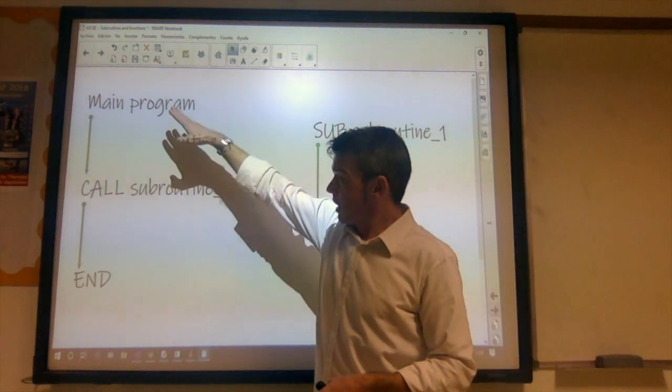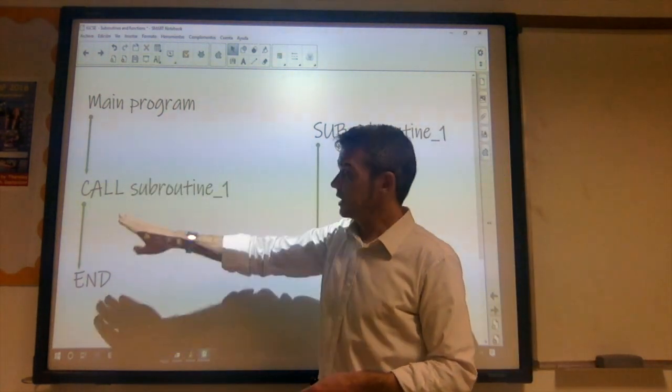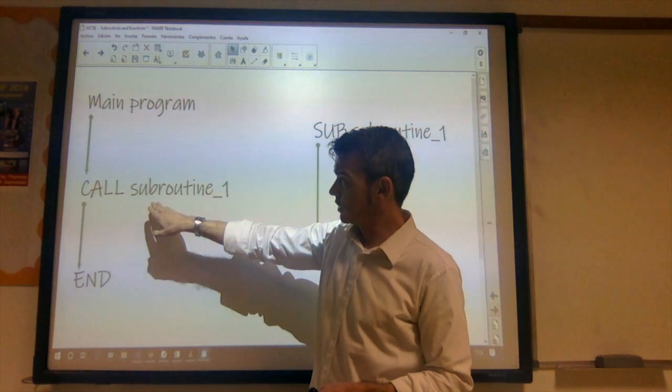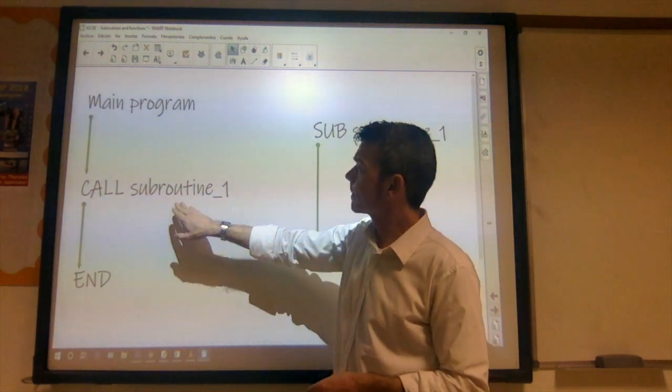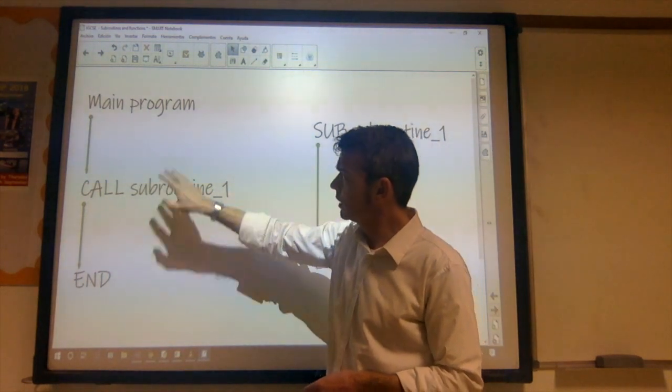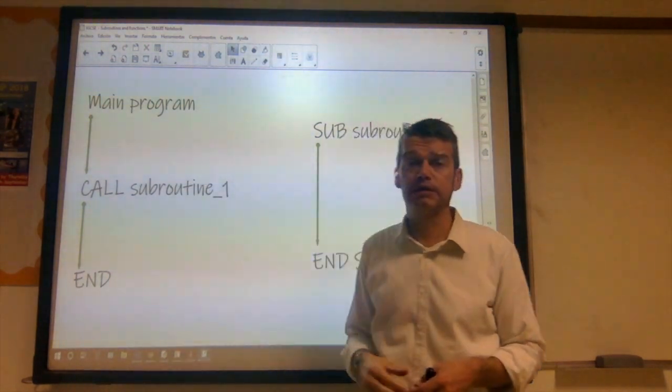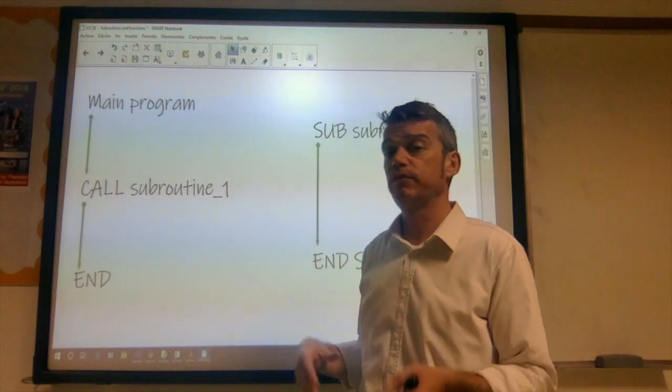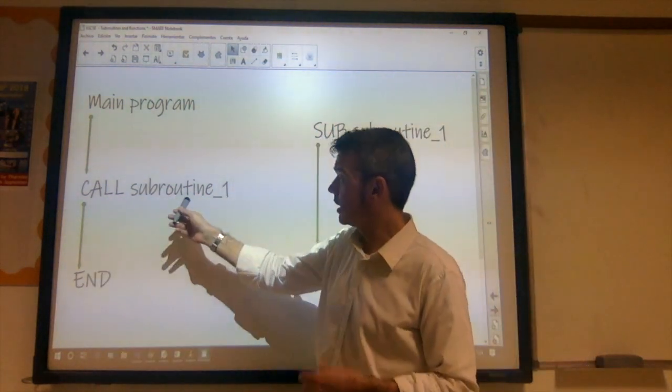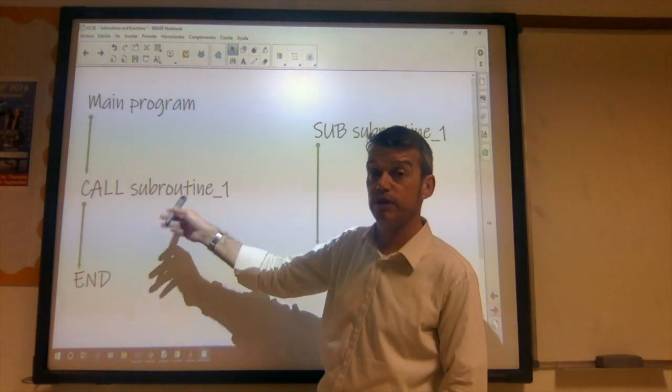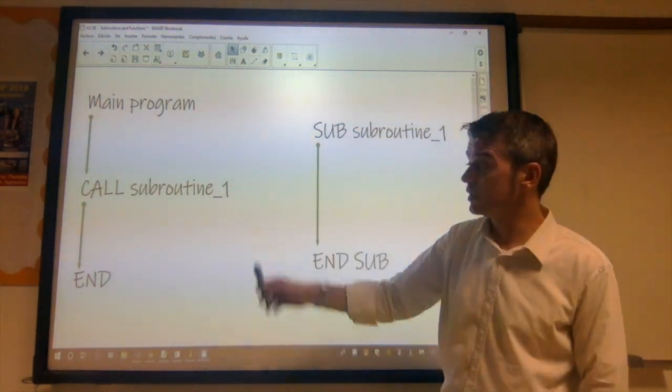So the main program is executing, executing until it reaches this function call here, subroutine call. And this is how it would appear in pseudocode, if you were to represent this in pseudocode, where you have the call keyword and then the name of the subroutine or function that is being called.